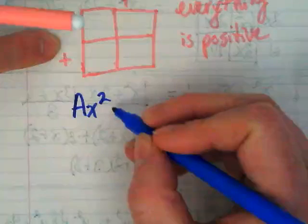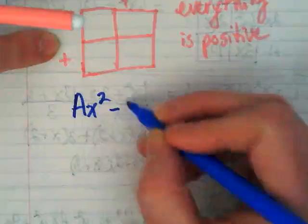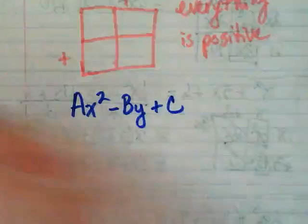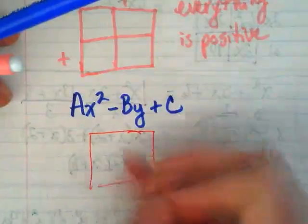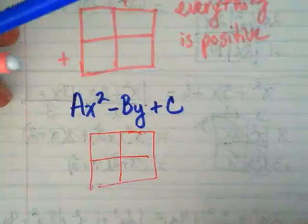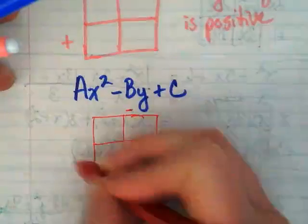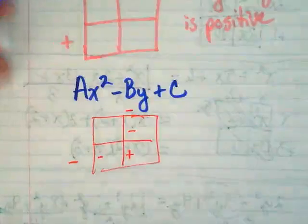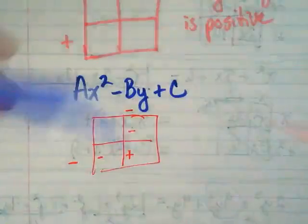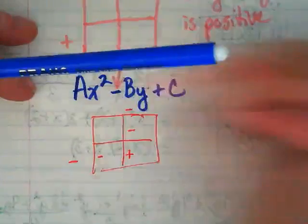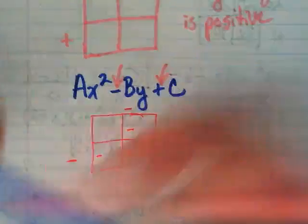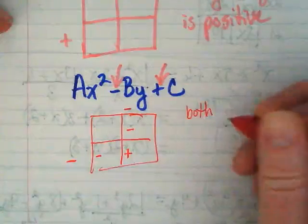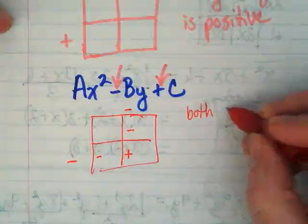If I have ax squared minus bx plus c, think about what that means for the box. Both numbers are going to be negative, so that I can get a positive product and negative terms in the middle. So if the middle is negative and the end is positive, both factors are going to be negative.